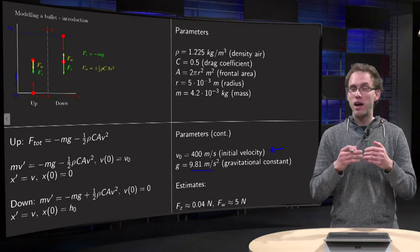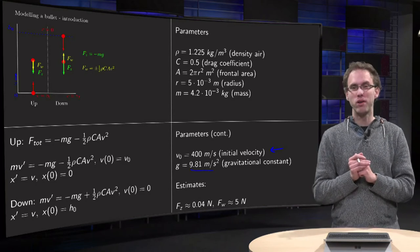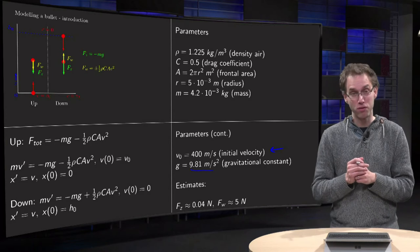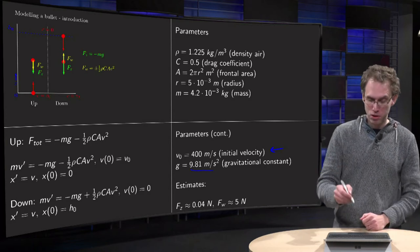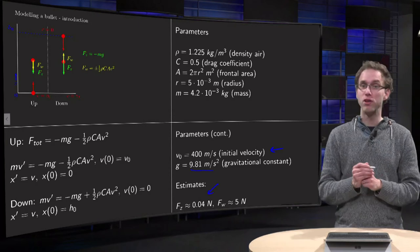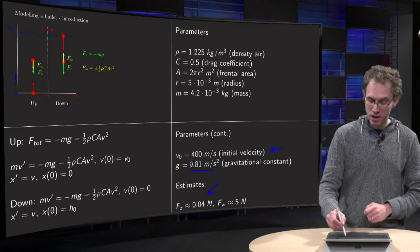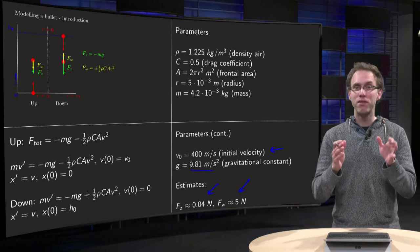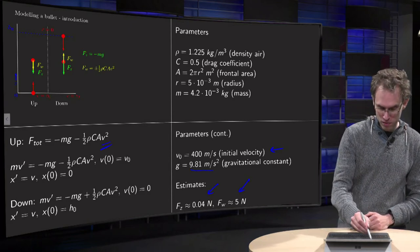So let us estimate first what the frictional force is and what the forces do due to gravity. So can you neglect the frictional force, for example? Well, no. Because if you just estimate what is approximately, then you get 0.04 newton for gravitational force. And initially, a much larger frictional force of 5 newton. That is due to your big velocity. And the velocity is in the friction like V squared.